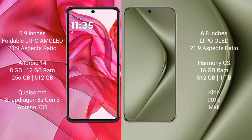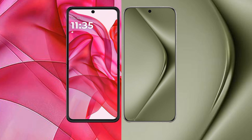The Motorola RAZR 50 Ultra features a Qualcomm Snapdragon 8s Gen 3 processor. The Huawei Pura 70 Ultra comes with 16GB RAM and 512GB or 1TB internal storage, powered by the Kirin 9010 processor with its integrated GPU.